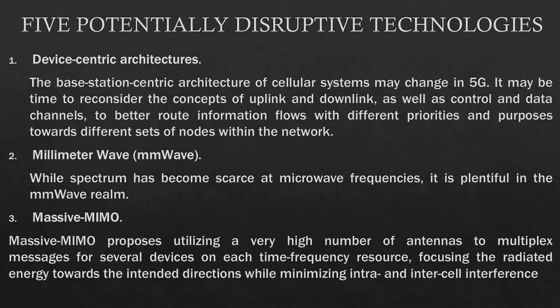Let us go to the description of all these. First is device-centric architectures. The base station centric architecture of cellular systems may change in 5G. It may be time to reconsider the concepts of uplink and downlink, as well as control and data channels, to better route information flows with different priorities and purposes towards different sets of nodes within the network. Second is millimeter wave, or mm wave. While spectrum has become scarce at microwave frequencies, it is plentiful in the mm wave, so researchers with diverse backgrounds are studying different aspects of mm wave transmission. Next is Massive MIMO, which proposes utilizing a very high number of antennas to multiplex messages for several devices on each time-frequency resource, focusing the radiated energy towards the intended direction while minimizing intra- and inter-cell interference.